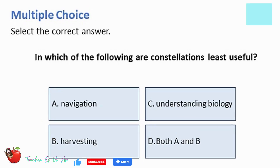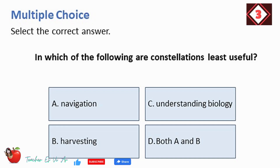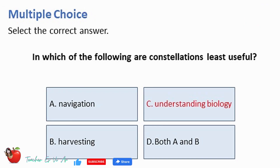Multiple choice, select the correct answer. In which of the following are constellations least useful? A. Navigation. B. Harvesting. C. Understanding Biology. D. Both A and B. The correct answer is C — Understanding Biology.